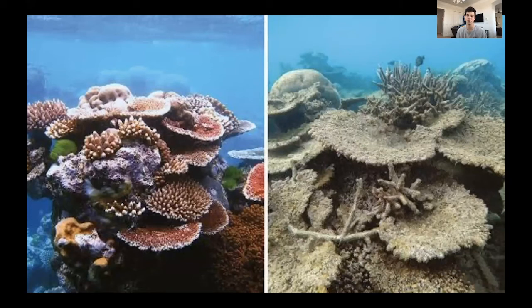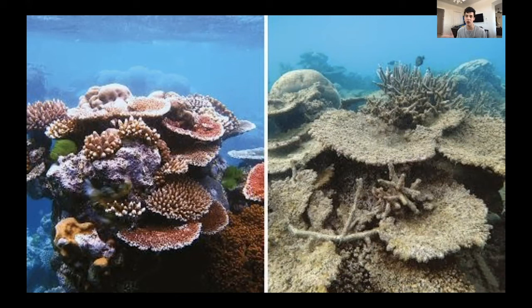Coral grows up toward the sunlight, but it's not able to do so because it is no longer as strong and dense as it used to be — it will snap or fall over. That is why the ocean becoming more acidic is causing lots of problems for coral reefs, due to the amount of CO2 being put into the ocean.